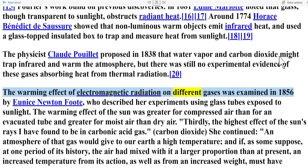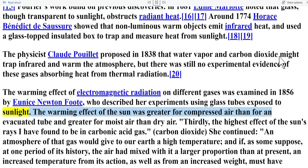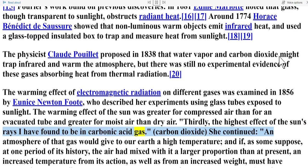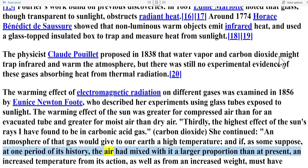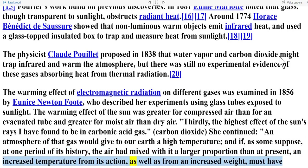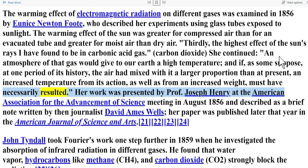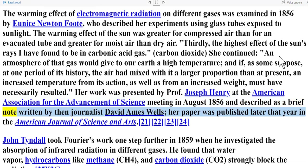The warming effect of electromagnetic radiation on different gases was examined in 1856 by Eunice Newton Foote, who described her experiments using glass tubes exposed to sunlight. The warming effect of the sun was greater for compressed air than for an evacuated tube, and greater for moist air than dry air. She found the highest effect to be in carbonic acid gas — carbon dioxide — and concluded that an atmosphere of that gas would give the earth a high temperature. Her work was presented by Professor Joseph Henry at the American Association for the Advancement of Science meeting in August 1856, and her paper was published later that year in the American Journal of Science and Arts.